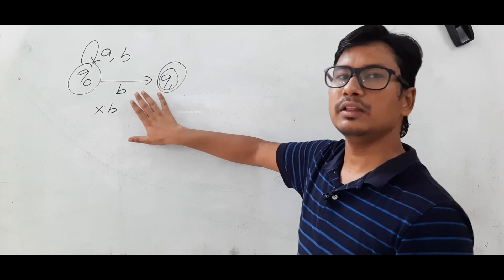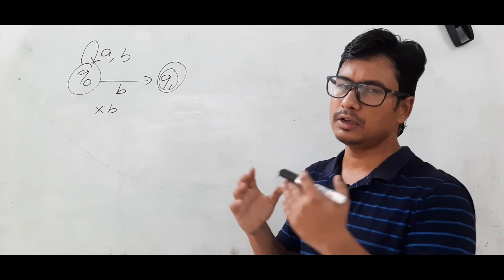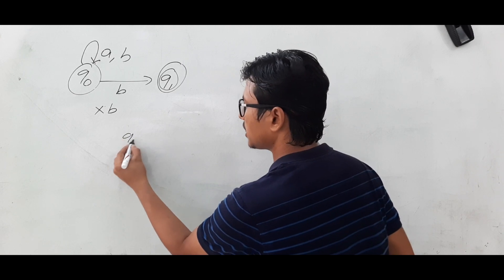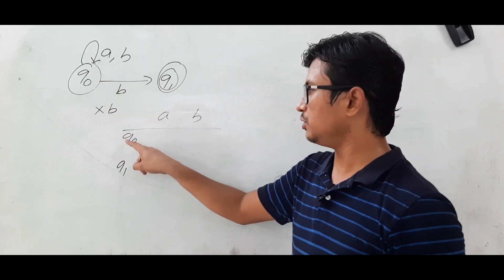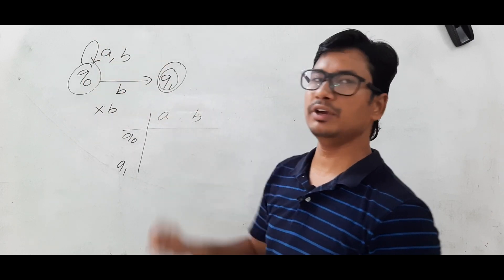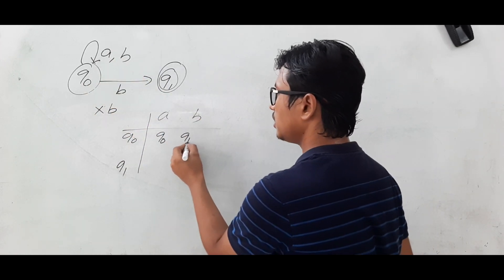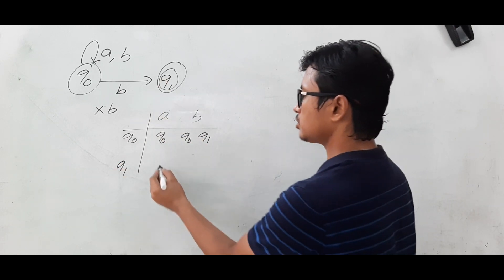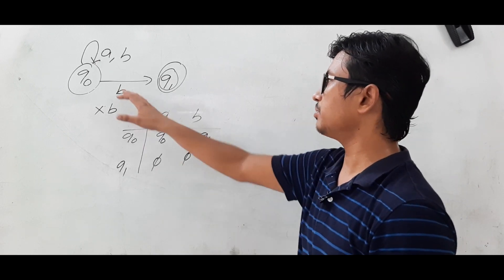I will draw the transition table from the transition diagram. The transition table consists of a set of states and alphabets. States are Q0 and Q1, and alphabets are A and B. Q0 on A goes to Q0. Q0 on B goes to Q0 and Q1. Q1 on A goes nowhere, and Q1 on B goes nowhere.